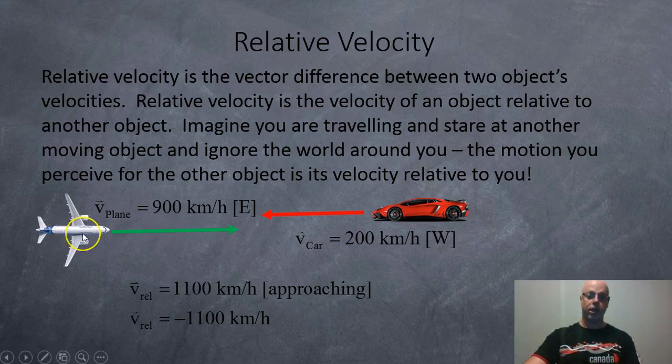So for example, in this example here, we have a plane traveling 900 km per hour east and a supercar traveling west at 200 km per hour. If they were to hit each other or just pass by, they are approaching each other at 1,100 km per hour, or approaching is sometimes written as a minus sign.